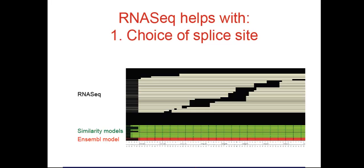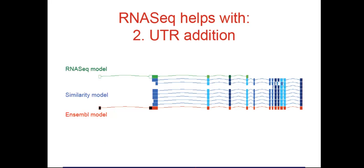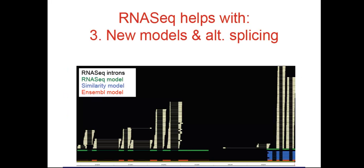Firstly, to filter alignments of proteins from other species to include only those proteins with splice sites that most closely match the tilapia RNA-Seq splice sites. Secondly, to extend annotation on the protein coding models into their untranslated regions. And finally, to fill gaps in our gene set where we could not annotate a gene using our standard annotation methods.